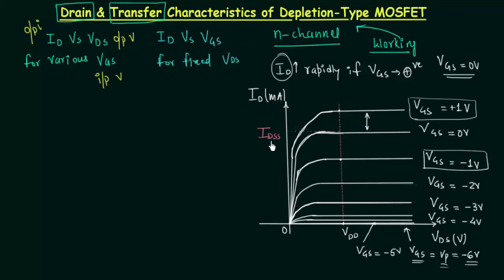In a JFET, IDSS is the maximum drain current for the device because VGS cannot be made positive. However, in N-channel depletion type MOSFET, VGS can be made positive, which increases the drain current beyond IDSS. Therefore, IDSS is not the maximum drain current for an N-channel depletion type MOSFET.